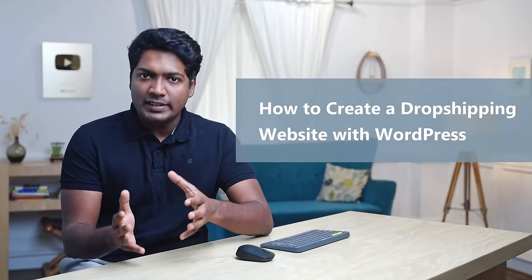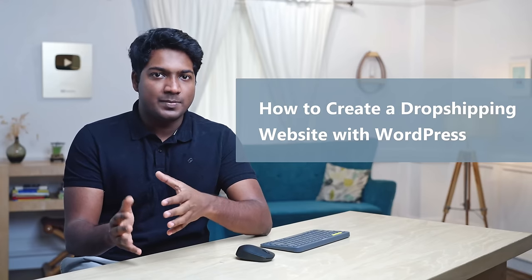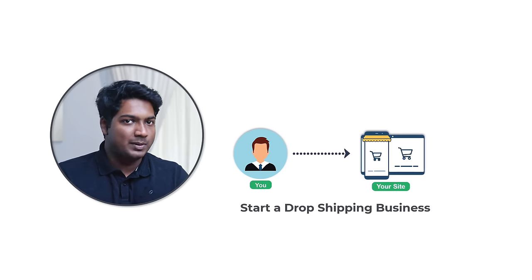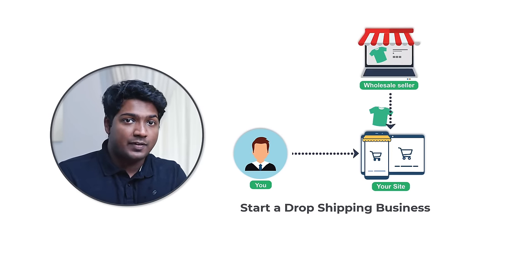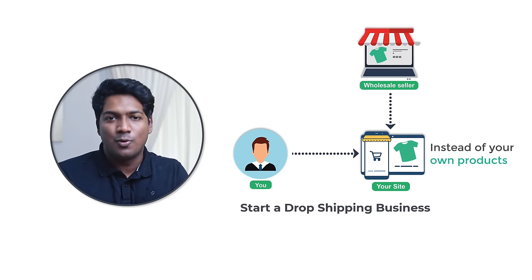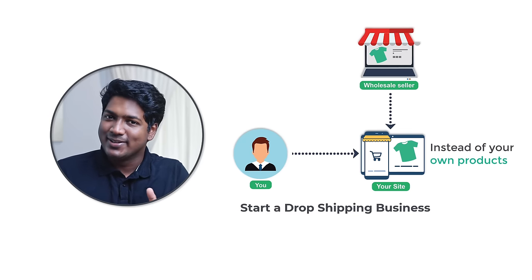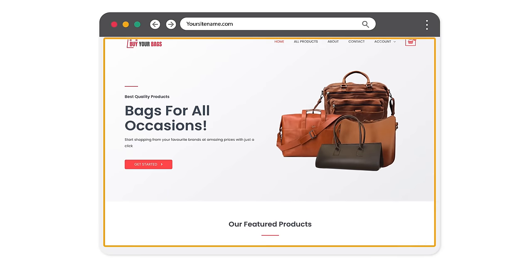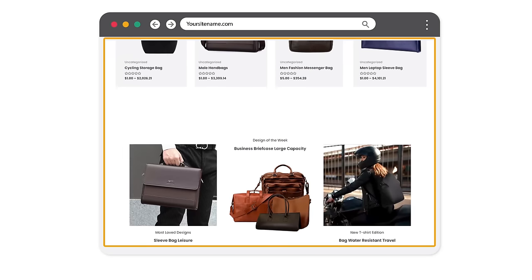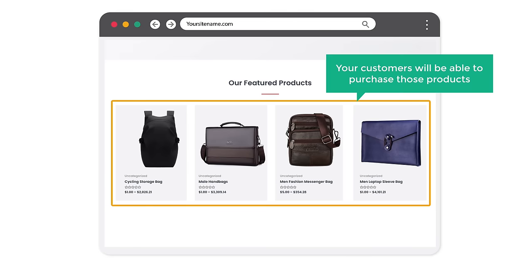Today we are going to see how you can create a dropshipping website with WordPress. Let's say you want to start a dropshipping business where you can sell products from other manufacturers or sellers instead of your own products. After watching this video, you will be able to create a dropshipping website like this where you can display your products on your site and your customers will be able to purchase those products.